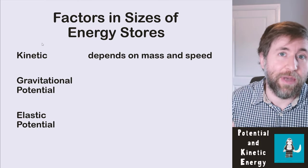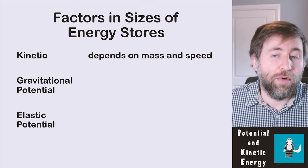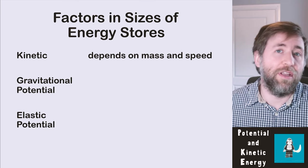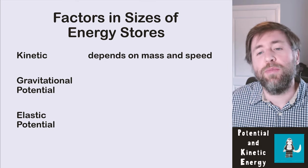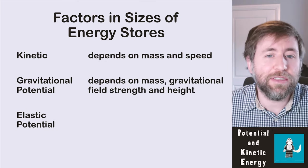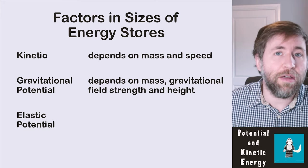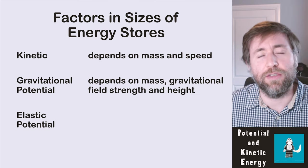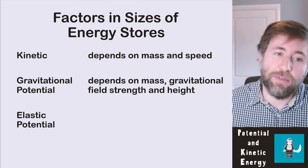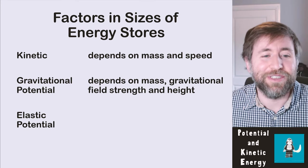Kinetic stores depend on mass and speed: more mass means more energy in the kinetic store, more speed means more energy in the kinetic store, and kinetic energy is proportional to speed squared. Gravitational potential energy depends on mass, gravitational field strength, and height — it's proportional to all three. Double the mass, double the gravitational potential. Double the gravitational field strength, double it. Double the height, double it.